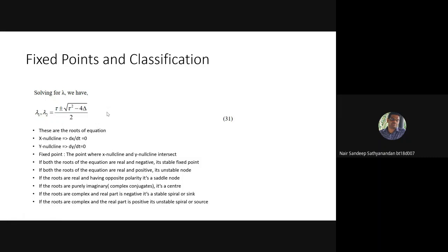The x-nullcline is where dx/dt equals zero — so there is no change in the x direction, only in the y direction. The y-nullcline is where dy/dt equals zero — y is stationary. The fixed point is the point where both the x-nullcline and y-nullcline intersect, meaning there is no change with respect to either x or y.